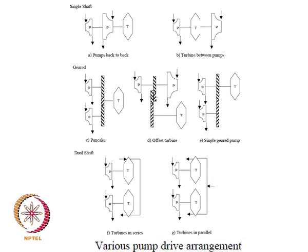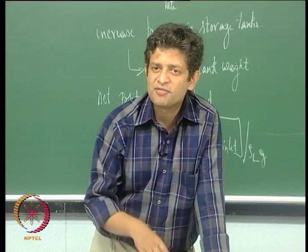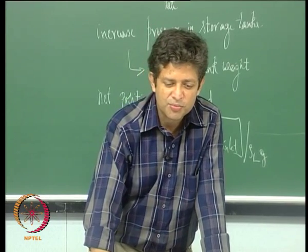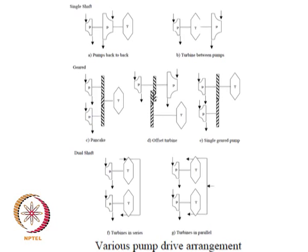The arrangement D has the turbine between the two pumps — the turbine on one side and the pumps on one side in the earlier arrangement; here the turbine is in between the two pumps. This works fine for propellants with similar densities, because the head rise required is nearly the same. If the densities are the same, you can work it out that they need to be rotated at the same RPM. So arrangement D works for propellants with similar densities, whereas B, C, and F work well for propellants with dissimilar densities.